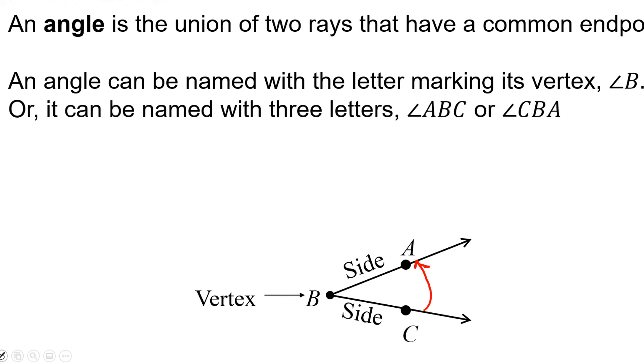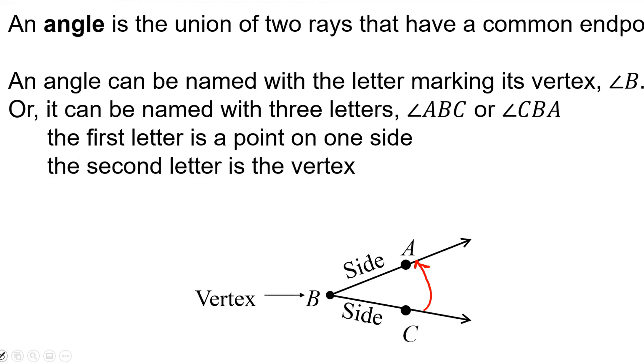You can also name it using three letters. So for example, we could name this same angle, angle ABC or angle CBA. The first letter has to be a point on one of the sides or the rays. The second letter has to be the vertex.